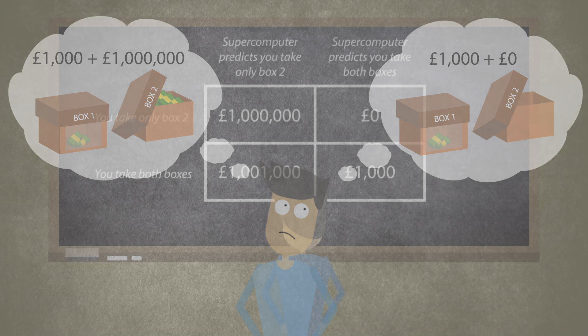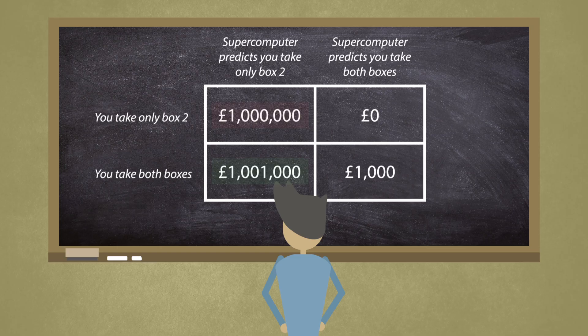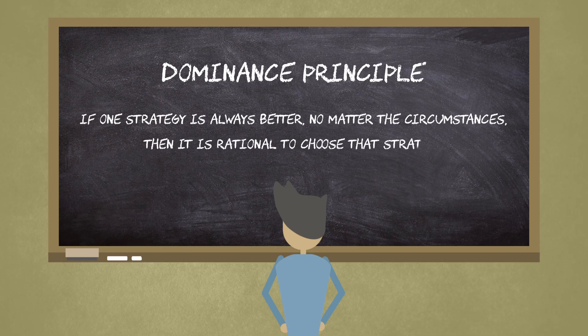The options and outcomes of the problem can be shown in a payoff matrix. Here, we can clearly see that taking both boxes will leave you with more money, whichever prediction the supercomputer has made. In decision theory, this follows the dominance principle, which states that if one strategy is always better, no matter the circumstances, then it is rational to choose that strategy.